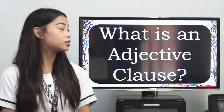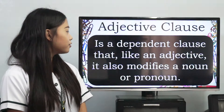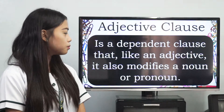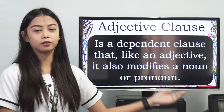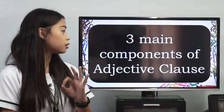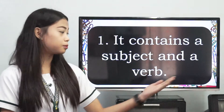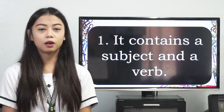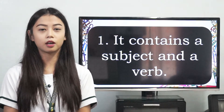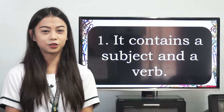What is an adjective clause? An adjective clause is a dependent clause that, like an adjective, also modifies a noun or pronoun. Adjective clause has three main components. The first one is that it contains a subject and a verb. A subject is the thing we are talking about in a sentence, while a verb is a state of being or an action word.